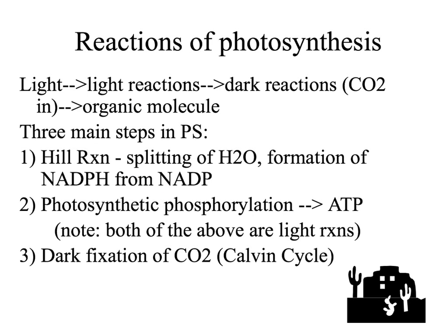Normally, light energy enters the light reactions, which then power the dark reactions. It's in the dark reactions that carbon dioxide is fixed and the organic molecule sugar is made. There are three main steps in photosynthesis: the first two are light reactions, the third is the dark reaction.